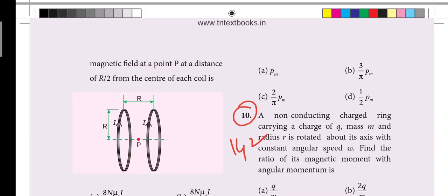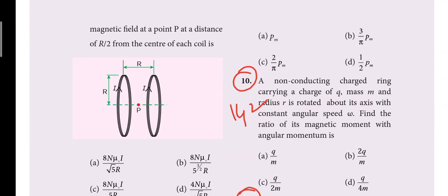Next one word, 10th one word, a non-conducting charge ring, carrying charge Q1 to M. Ratio of magnetic moment with angular momentum. So this is 142 page based. So 10th one word, reduced one word.